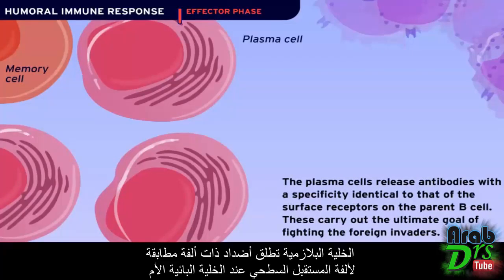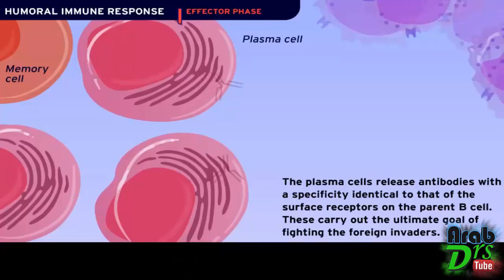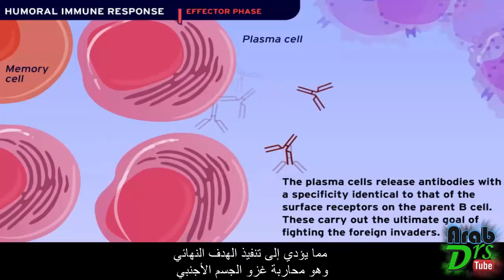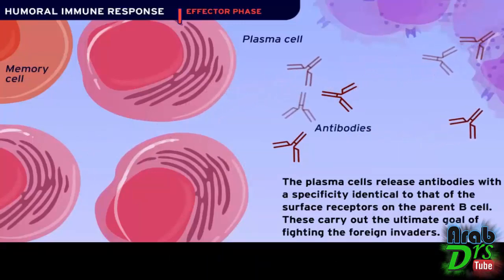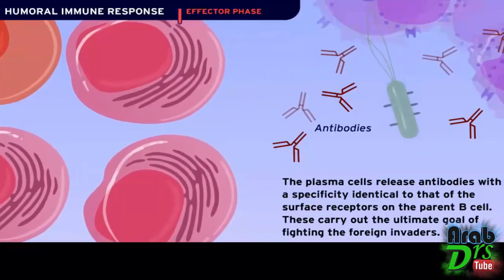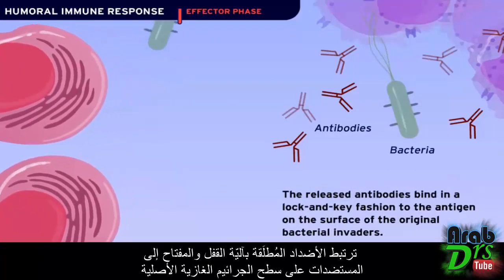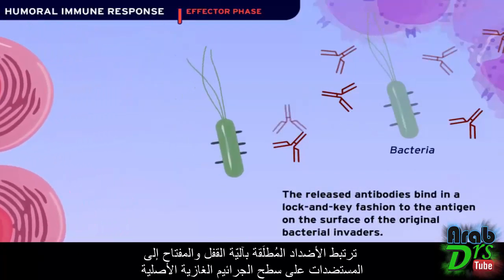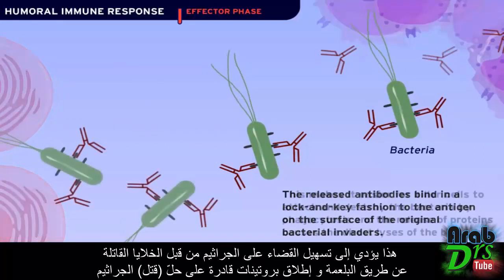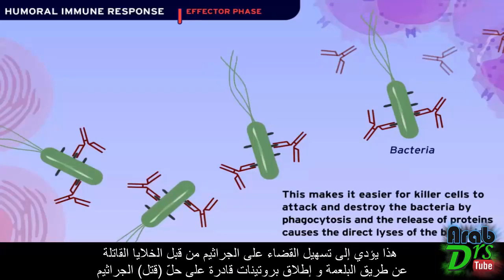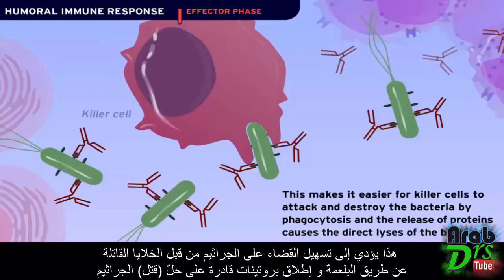The plasma cells release antibodies with a specificity identical to that of the surface receptors on the parent B cell. These carry out the ultimate goal of fighting the foreign invaders. The released antibodies bind in a lock-and-key fashion to the antigen on the surface of the original bacterial invaders, making it easier for killer cells to attack and destroy the bacteria by phagocytosis, and the release of proteins causes the direct lysis of the bacteria.